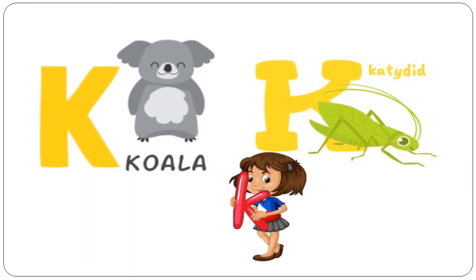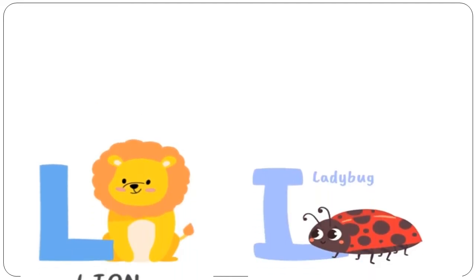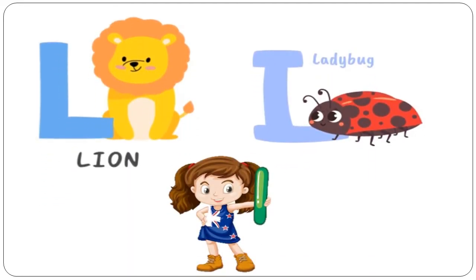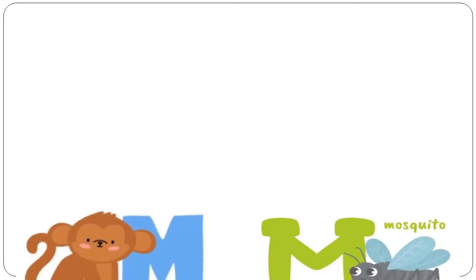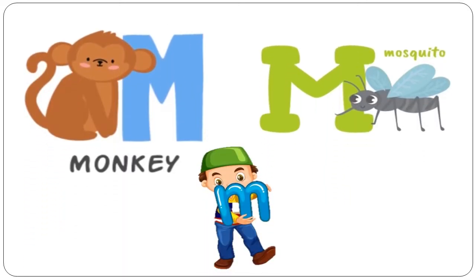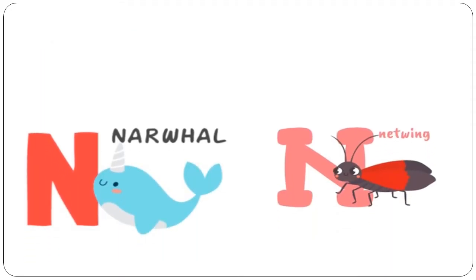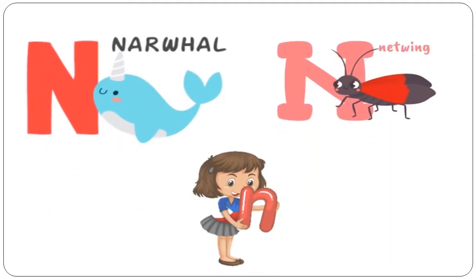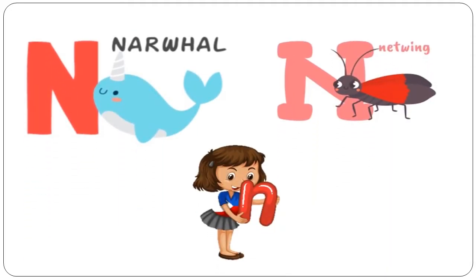K is for Katydid. L is for Lion. L is for Ladybug. M is for Monkey. M is for Mosquito. N is for Narwhal. N is for Netwing.